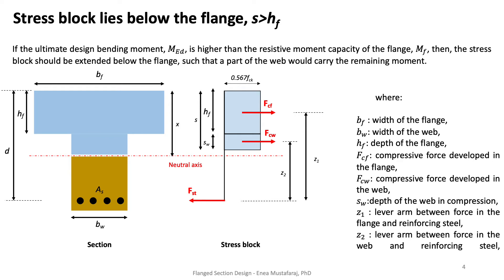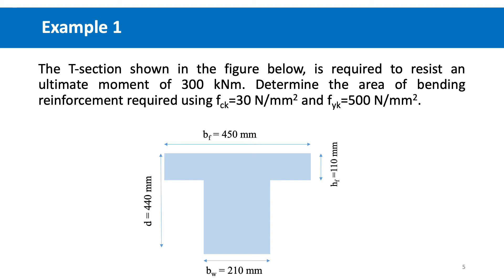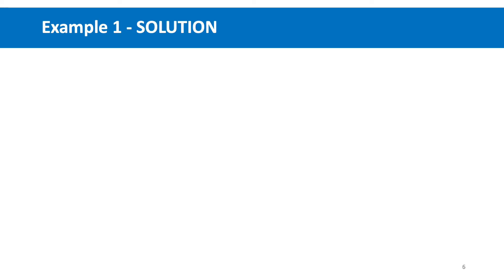Let's see some examples. In Example 1, a T-section is shown with dimensions: BF = 450 mm, effective depth = 400 mm, width of the web BW = 210 mm, and thickness of the flange HF = 110 mm. This section is required to resist an ultimate bending moment of 300 kNm and we need to find the area of bending reinforcement. To solve this, we first need to identify whether the neutral axis lies in the flange or in the web.